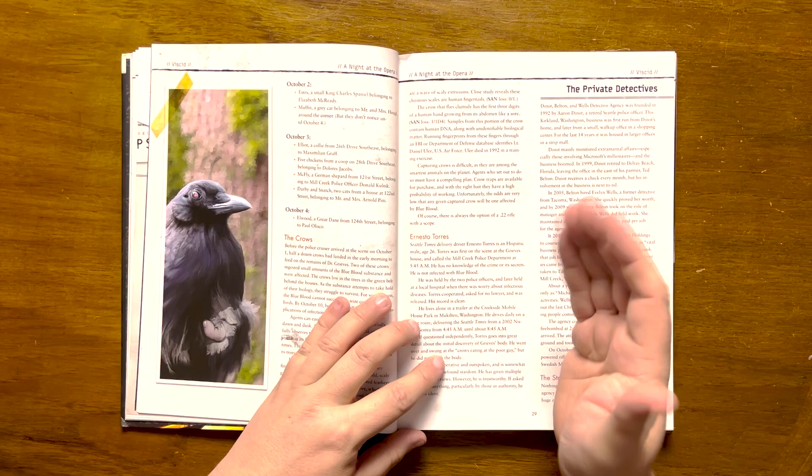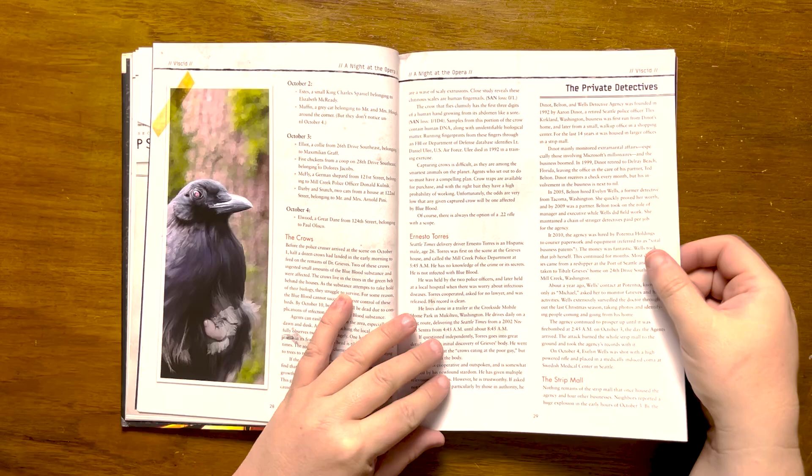Also of interest here is Ernesto Torres, the delivery man who discovered Greaves. He can inform the agents about the crows.